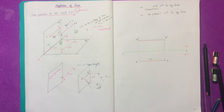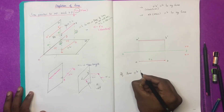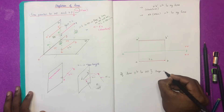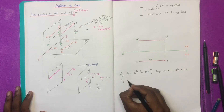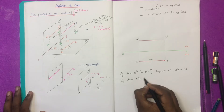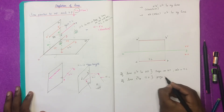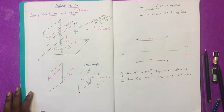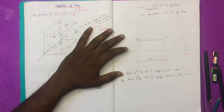We won't get the value of true length unless the line is parallel to the plane. If the line is parallel to HP, the projection on HP — that is AB — will be equal to true length. If the line is parallel to VP, then the projection of that line on VP — that is A'B' — will also be true length.